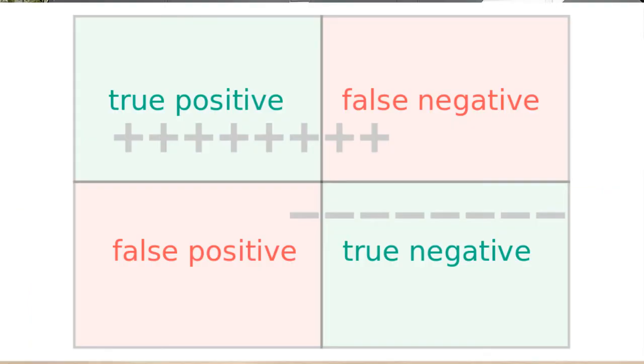However, unavoidably, unregarding of which threshold value is chosen, you will always have some wrongly classified cases. Some infected people will be classified as non-infected. These are called false negatives.